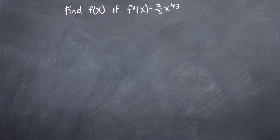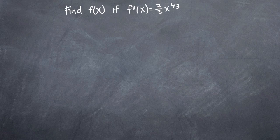In this particular problem, we've been asked to find f of x if f double prime, or the second derivative of x, is equal to two-thirds x to the two-thirds. So in order to find f of x, the original function from f double prime of x or the second derivative, we need to work backwards. We'll take the integral of f double prime of x to find the first derivative, f prime of x, and then take the integral of that to find f of x.